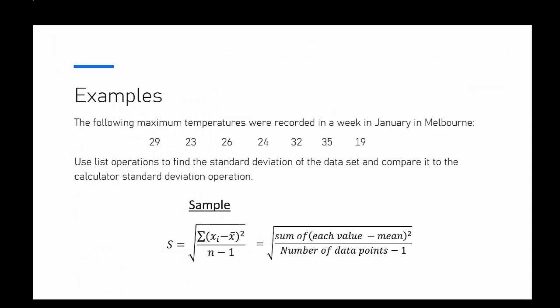I've just brought us back to the example because now we've entered the data points I want to look at the calculation we're actually going to be doing. For standard deviation, we're going to take each value on that list, minus the mean of those seven points from that particular value, and then square each of those values — ending up with seven data points which are (value minus mean) squared. Then we add all of those together, divide by the number of data points minus one (so seven minus one equals six), and then take the square root of that, which gives us our standard deviation.